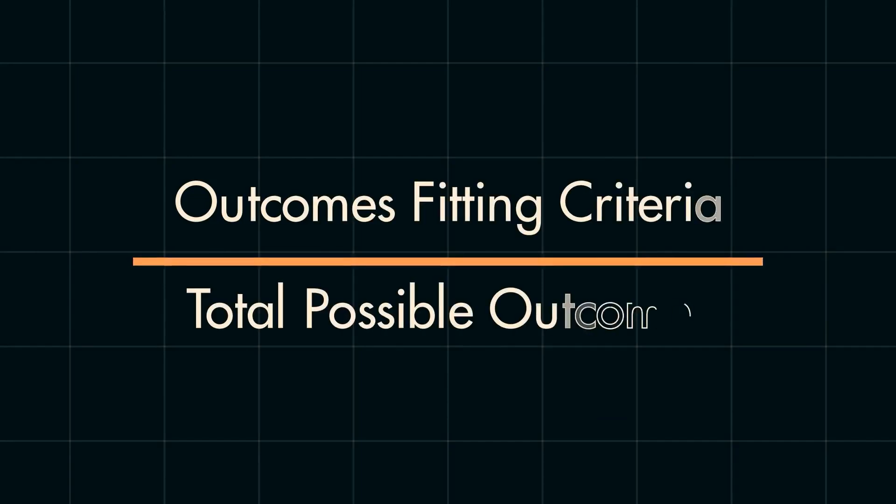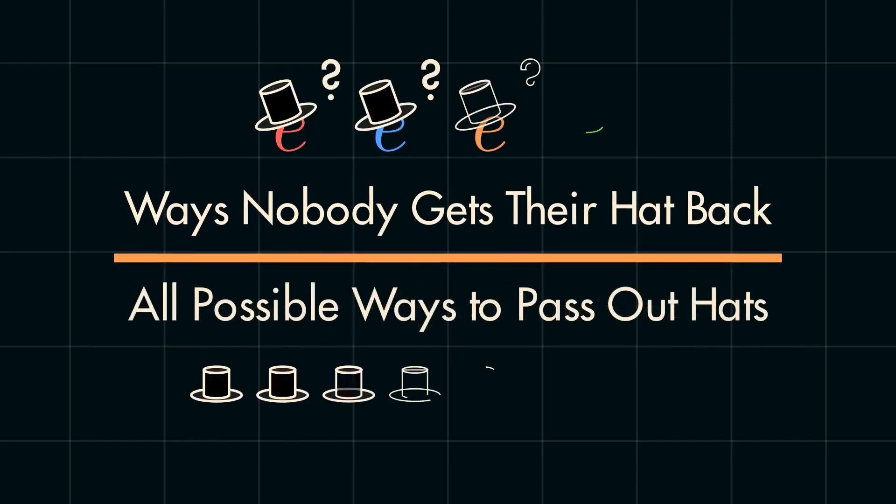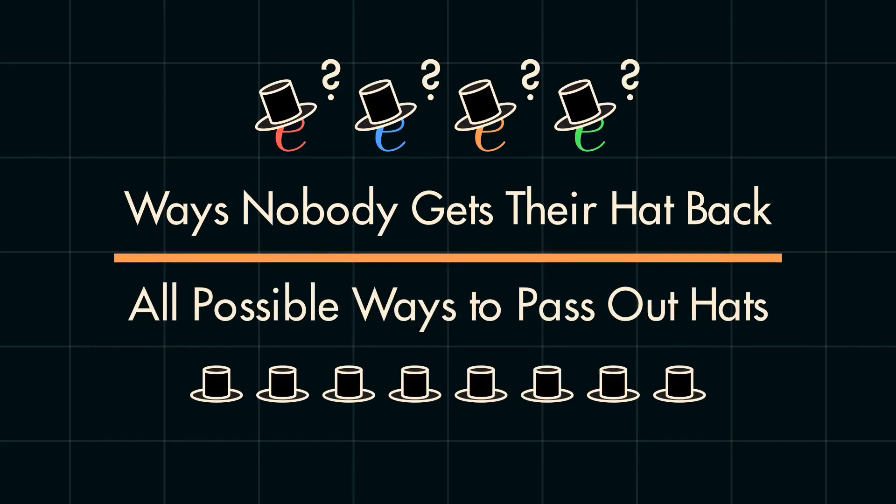Well, let's first get an intuition of what we are actually trying to find. To find a probability, we need two parts. The total number of possible outcomes, and the number of outcomes that fit the criteria. In context, we need to find the total number of ways the hats could have been passed out, and the number of outcomes so that no one gets their hat back.